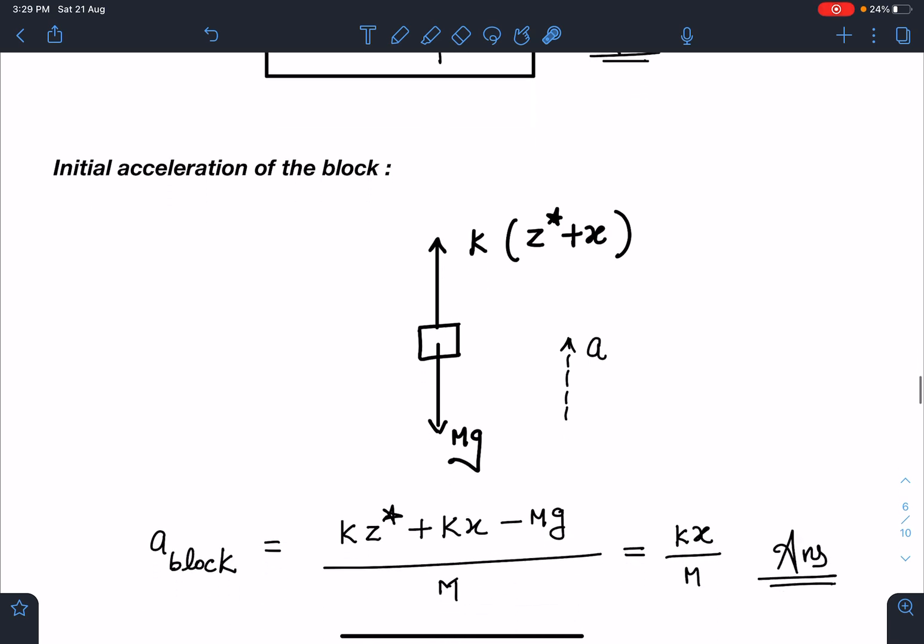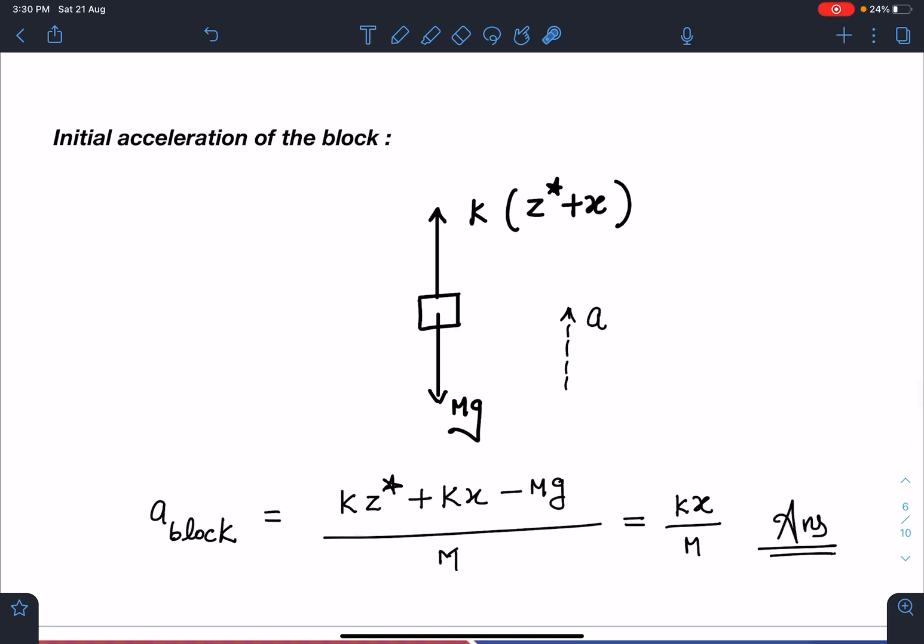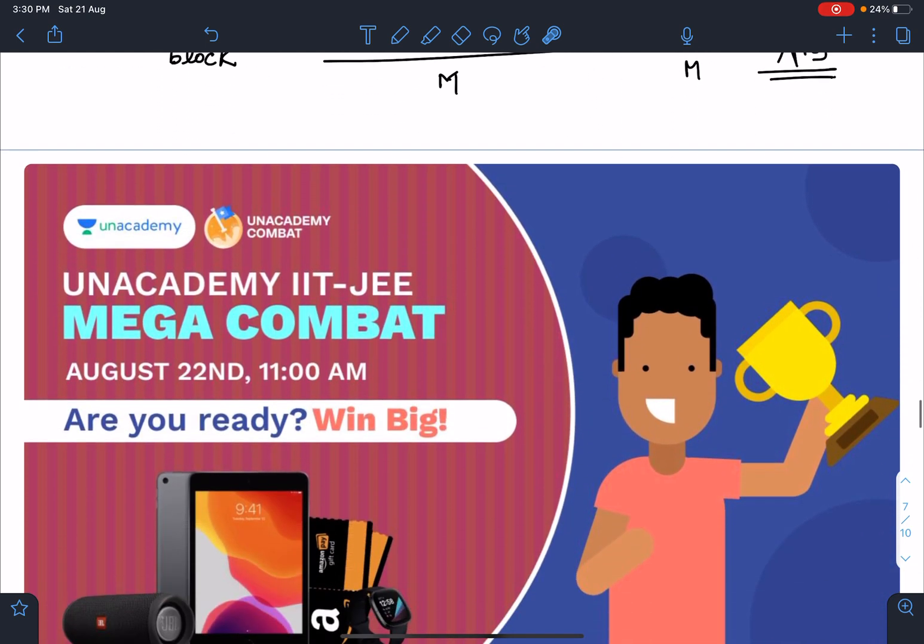Initial acceleration of the block - now it's very easy. Once the spring becomes uniform, it is a k(z* + x) uniform spring with Mg downward. Just after removing point P, the spring will very quickly come into its uniform extension and then this block will start moving upward. When I write this, F - Mg = ma, so the acceleration of the block will be a = kx/m. This is the answer for the next part.